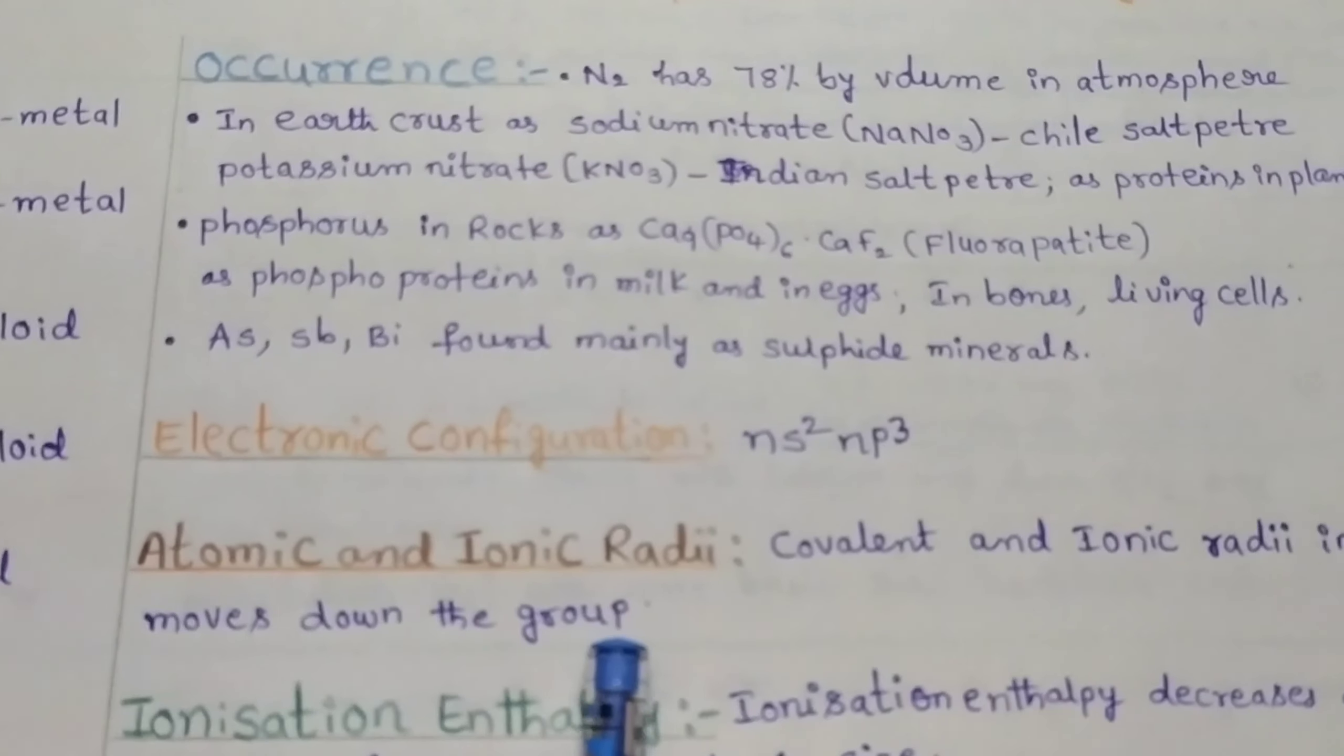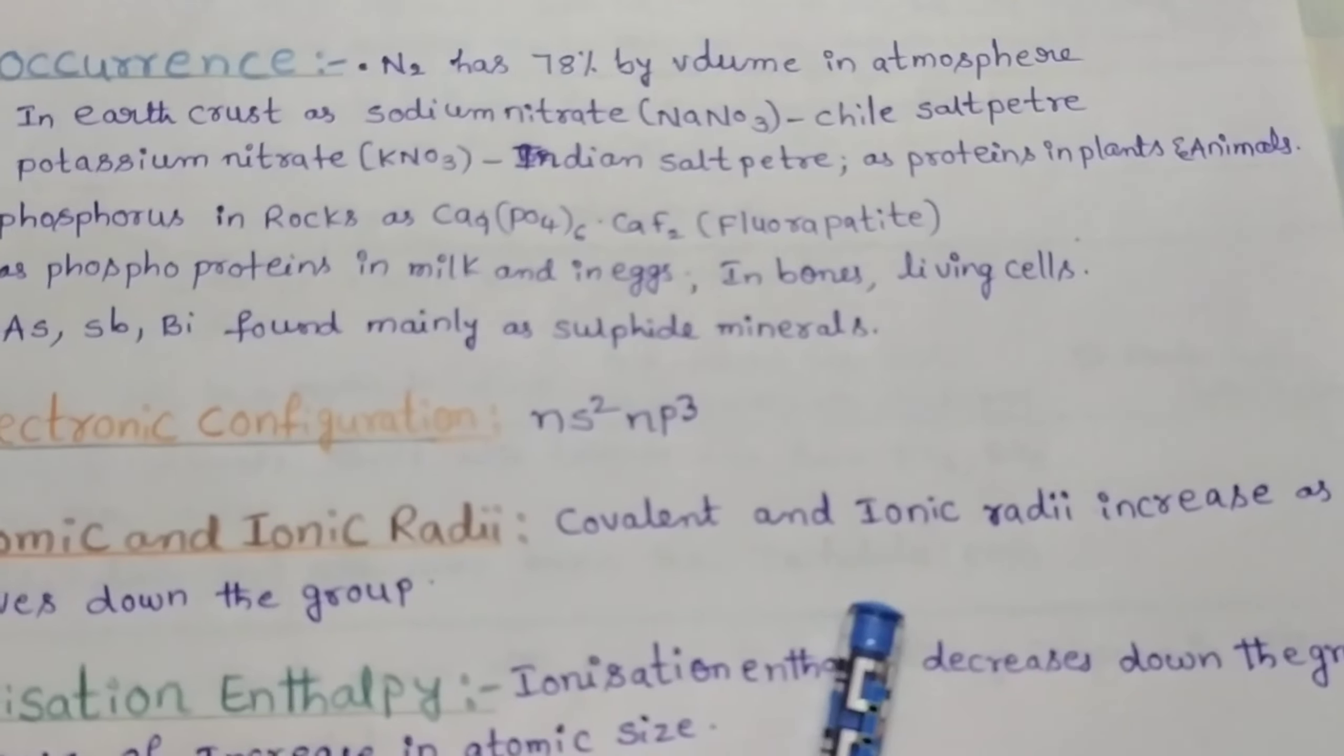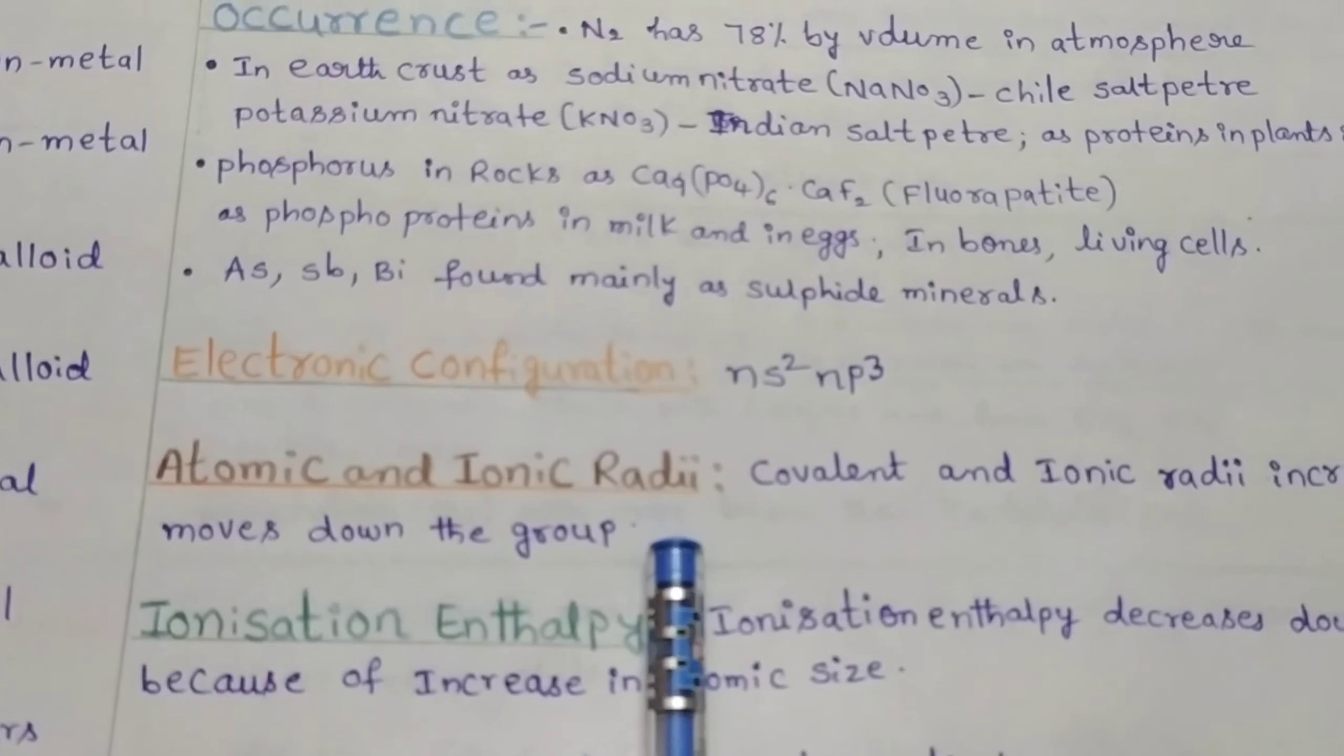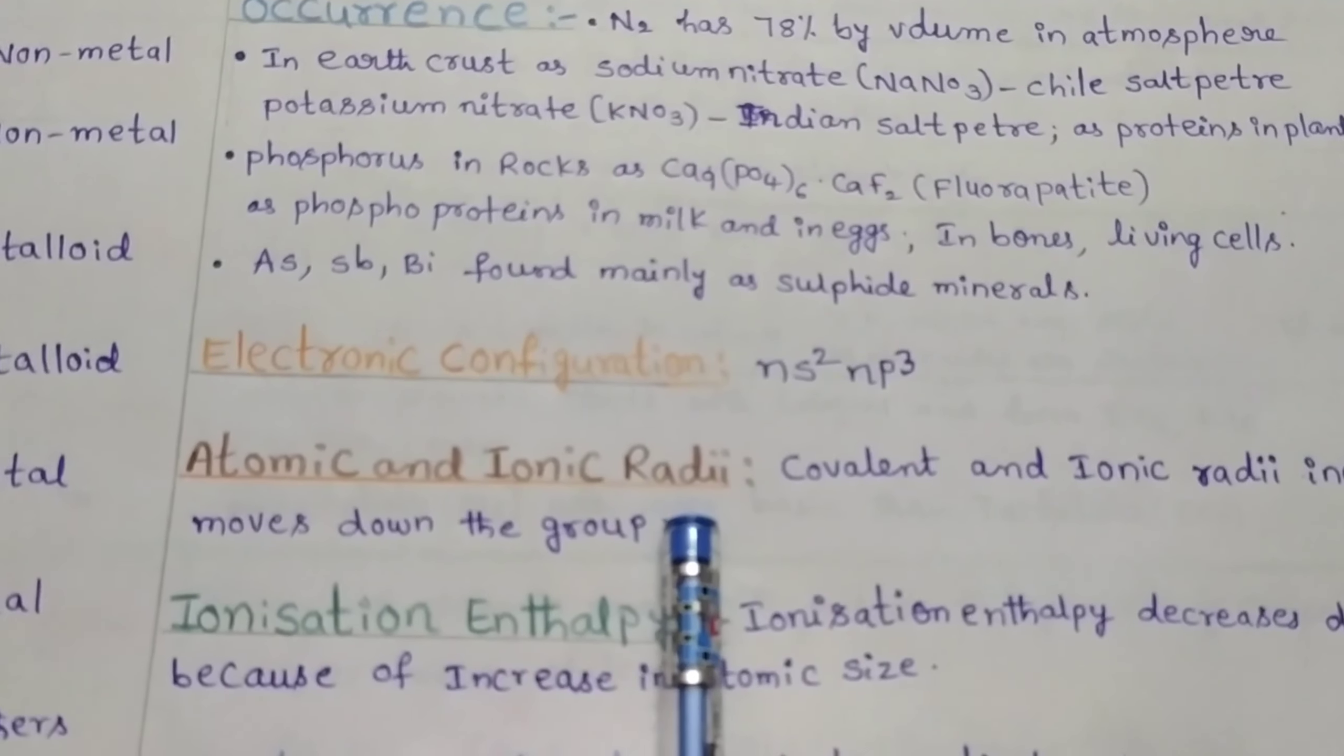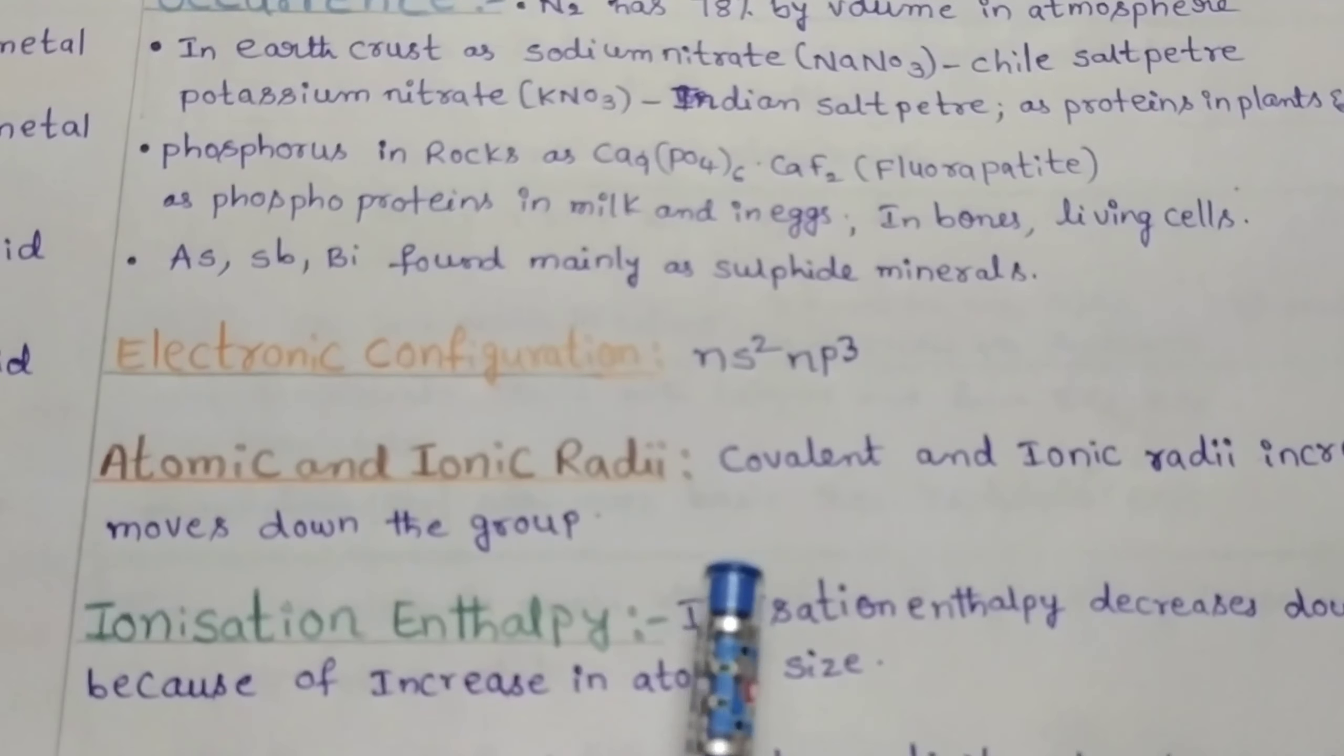Atomic and ionic radius. The covalent and ionic radius of group 15 elements increases as we go down the group. That means the atomic size increases down the group, so covalent and ionic radius also increases.